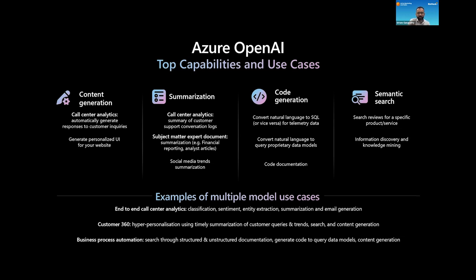One example is call center analytics. Let's say you have customers calling in — it doesn't even have to be an enterprise call center. As a customer service agent responding to those calls, it would be great if we could take all of the transcripts of the calls coming in and have the AI automatically generate responses for the agent to use as a draft, as a co-pilot. The AI model is intelligent enough to know previous call patterns for the same customer, or look up new promotions based on keywords the customer mentions — all of which is very hard for a call agent to instantly understand and respond to.